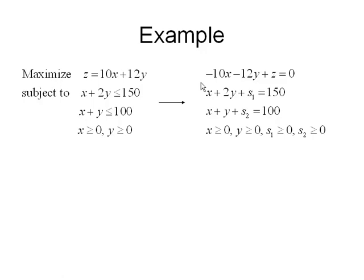I need to convert my constraints with my slack variables. x plus 2y less than or equal to 150 will become x plus 2y plus s1 equals 150. x plus y less than or equal to 100 will become x plus y plus s2 equals 100.